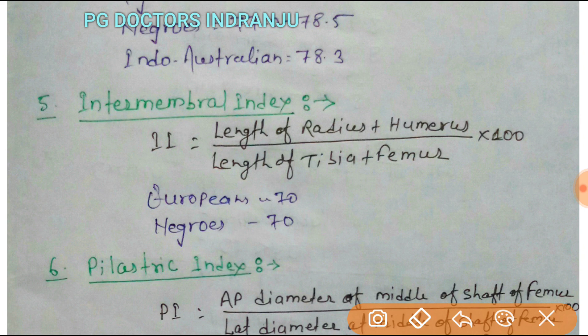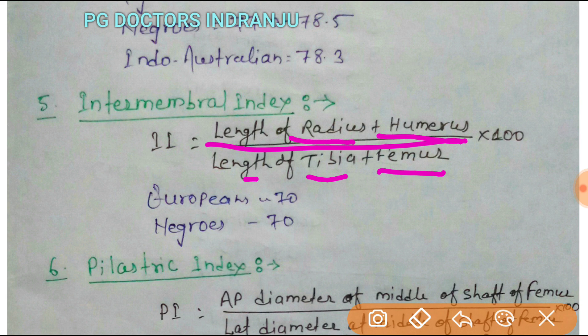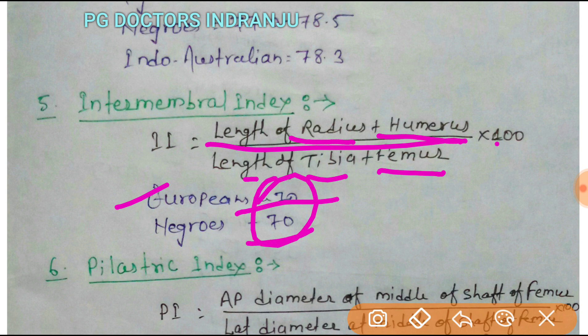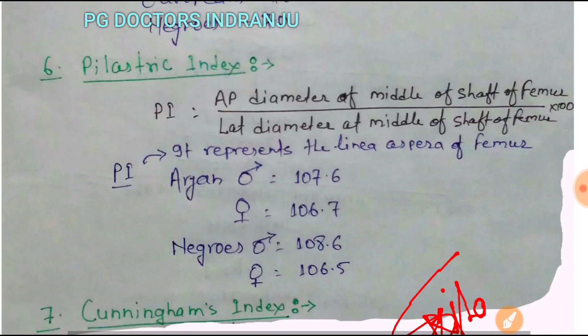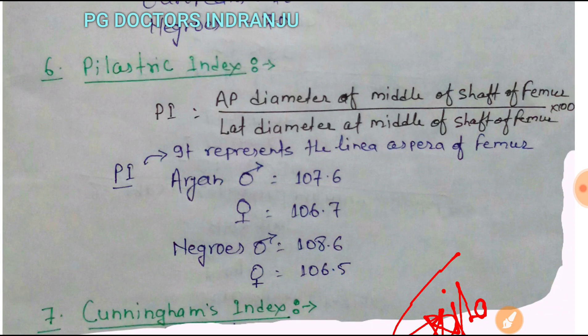Next is the intermembral index. The intermembral index equals the length of the radius plus the length of the humerus, divided by the length of the tibia plus the length of the femur, multiplied by 100 — that means upper limb to lower limb length ratio. In Europeans it is approximately 70, and in Negroes it is also 70.